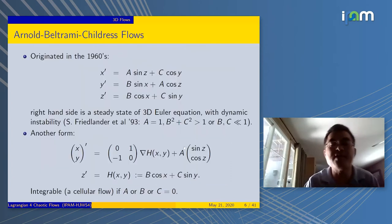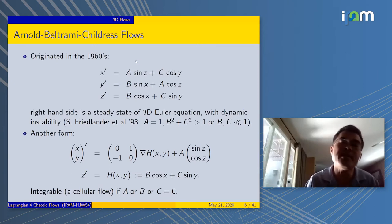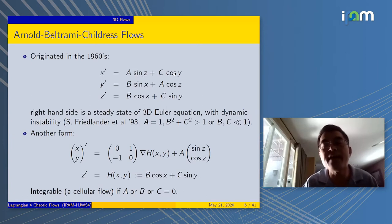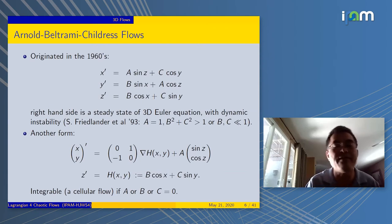Let's look at the three-dimensional case. This is a well-known Arnold-Beltrami-Childress flow, ABC flow for short. The right-hand side are trig functions, very explicit. The first component is a function of y and z, not x. Second component is a function of x and z, no y. The third component has no z in it.